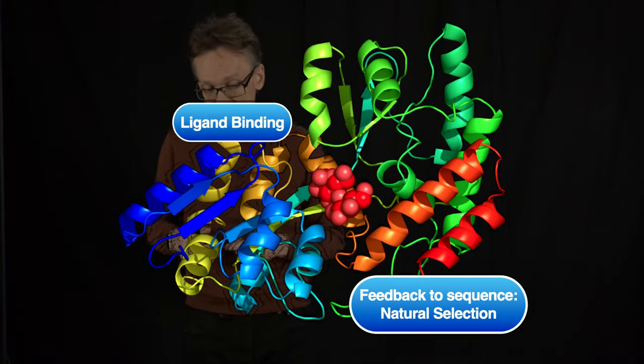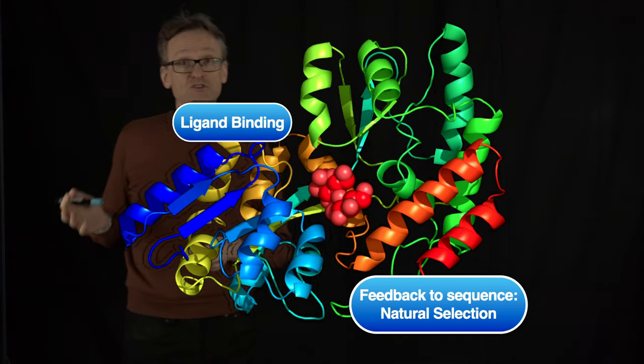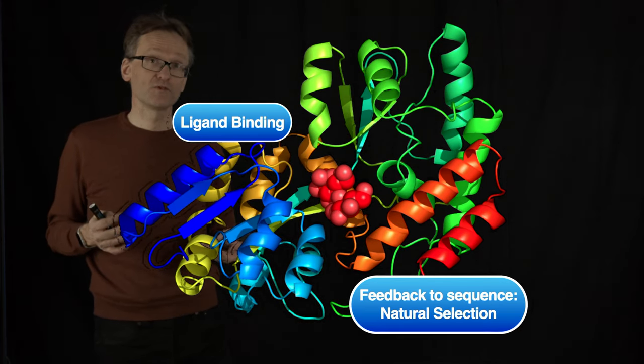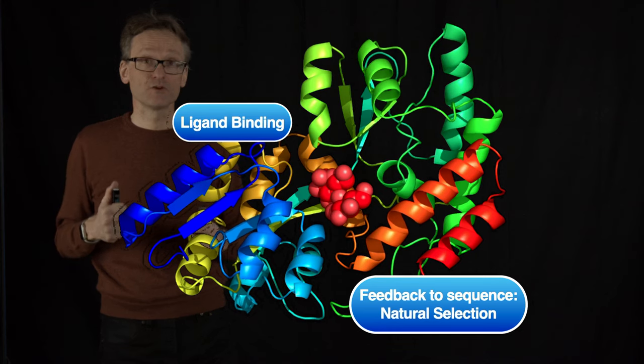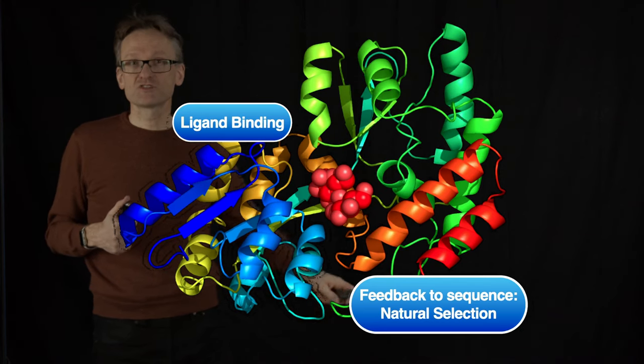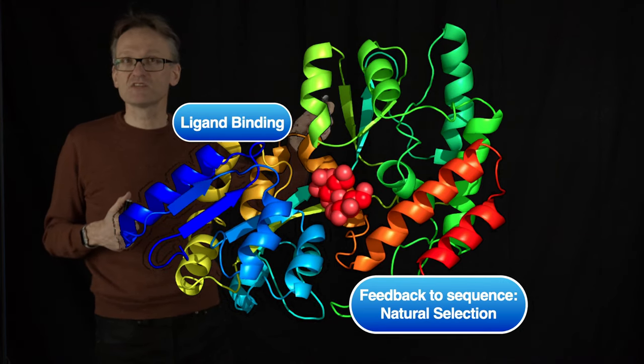This is also the key why we can look at things either from a physics point of view or an information point of view. If we did not have this feedback loop, there would be no way of physics to feed back into the sequence in our genes.